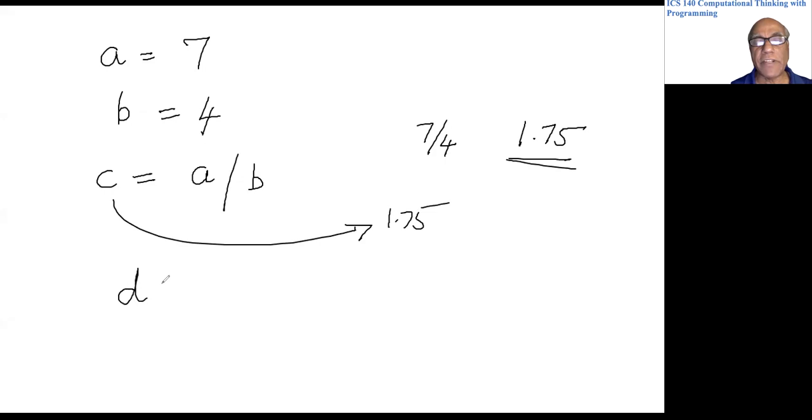On the other hand if I write d equals a slash slash b, this will also do the division but it will take the seven, divide by four, and completely forget about the point seven five. So the answer here would be one. It only worries about the integer part of the division, so d would be one.